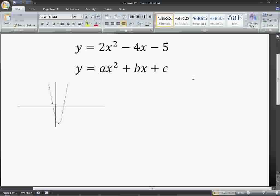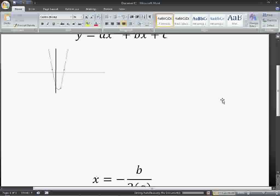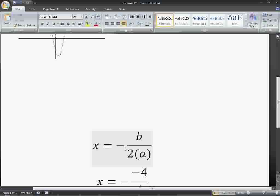So, the first thing that we're going to do is we're going to try to find the center point, or the minimum in this case, right here. Which you can find with this formula: x equals negative b over 2a.